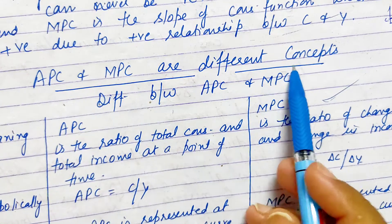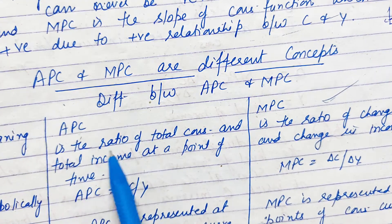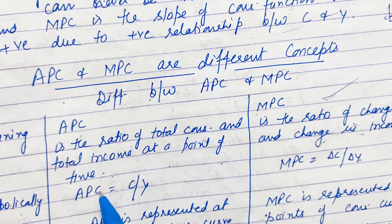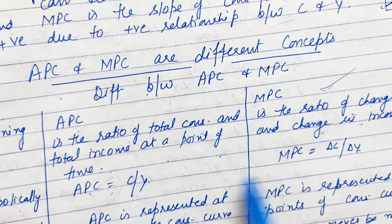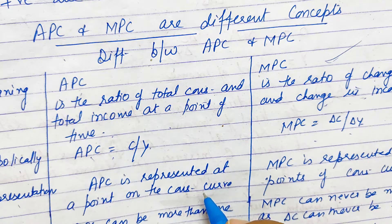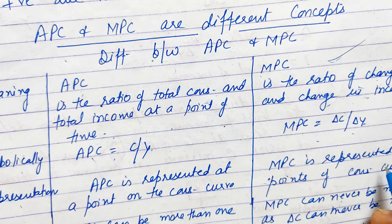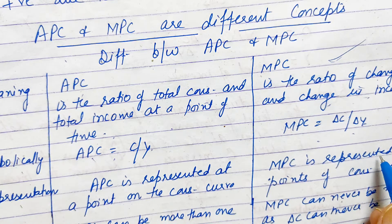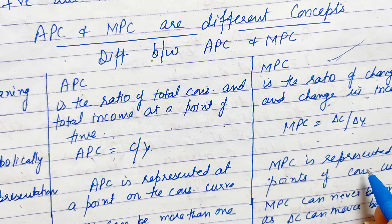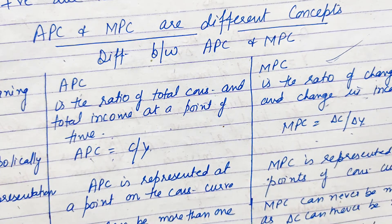Now the difference between APC and MPC: APC is the ratio of total consumption to total income, whereas MPC is the ratio of additional consumption to additional income. Symbolically, APC = C upon Y, and MPC = delta C upon delta Y. APC is measured at one point on the curve — total consumption and total income at a single point — whereas MPC is measured between two points on the consumption curve. APC is not the slope of the consumption curve, whereas MPC is the slope of the consumption curve.